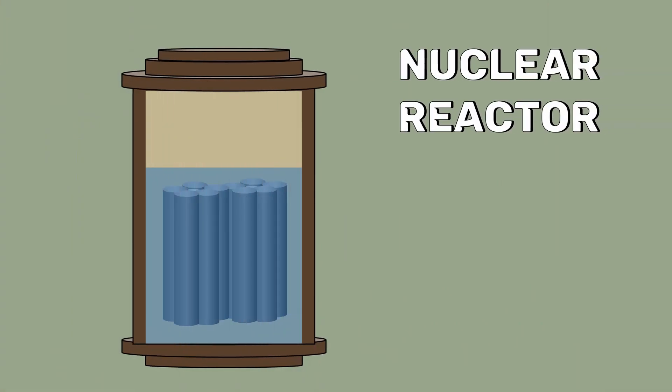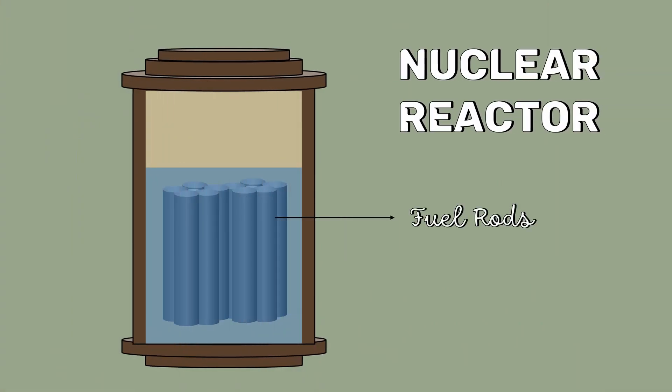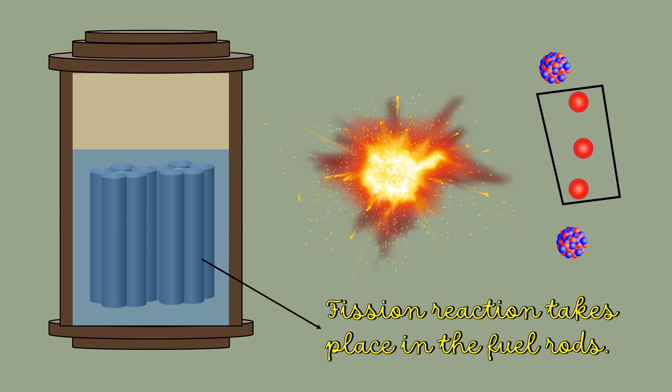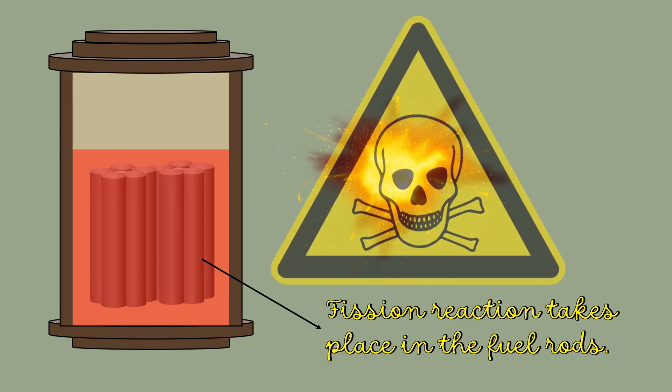Inside the nuclear reactor, these fuel rods are immersed in water, which acts as a coolant. Since each fission produces three high-energy neutrons, huge thermal energy is produced, which is far more than required by the nuclear power plant and also dangerous.